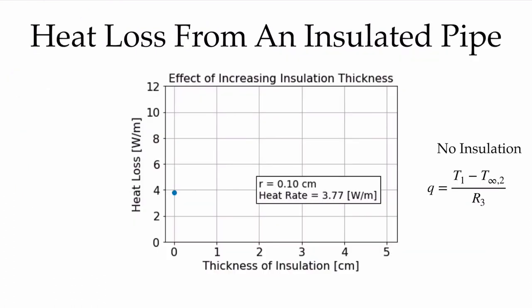Starting with no insulation at all, I evaluate my resistances. There's only the convection resistance in this case because there's no insulation. The total resistance is given by that equation, and I'm also going to evaluate the thickness of insulation, which is the difference between R3 and R2 — zero when there's no insulation. The heat rate is 3.77 watts per meter.